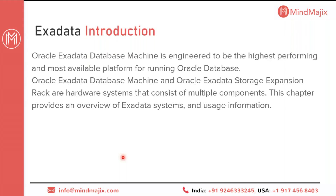Oracle says that Exadata Database Machine is engineered to be the highest performing and most reliable platform for running the database. In the very first version, Exadata was a joint venture of HP and Oracle — that version was v1. Before Oracle released v2, Oracle acquired Sun Microsystems, so from v2 onwards the series changed to X. After v2 came x2, then x3, x4, x5, x6 — which is what we cover in this training. Currently x8 is the latest release, though even Oracle University's current exam is still built on x5 and x6.